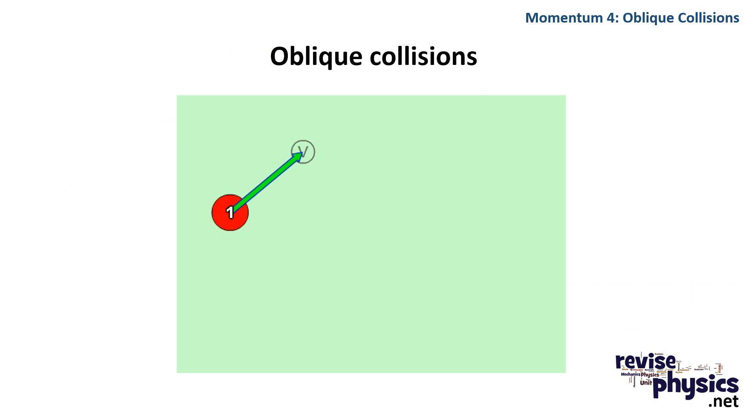An oblique collision is just a collision that happens at an angle. So instead of coming head-on to the side of the box, this particle here is going to come in at an angle like so.